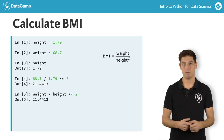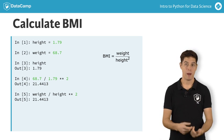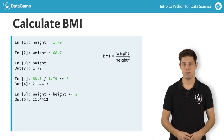Every time you type the variable's name, you're asking Python to change it with the actual value of the variable. Weight corresponds to 68.7 and height to 1.79.